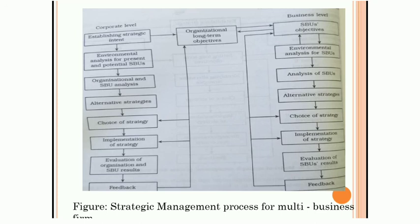The last steps are evaluation and control, and then feedback. Through feedback, we check whether the objective is achieved or not. If not, we re-implement the strategy and check again. If the objective is still not achieved, we reformulate the strategy. If still not achieved, then finally we reset the objective.